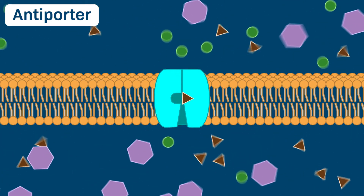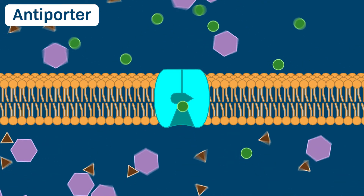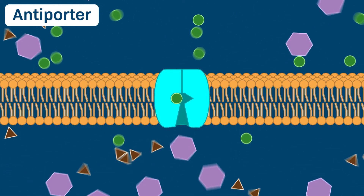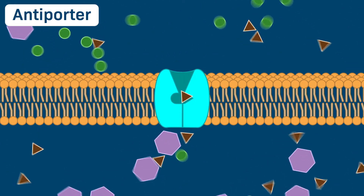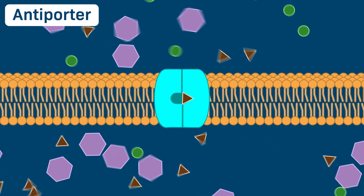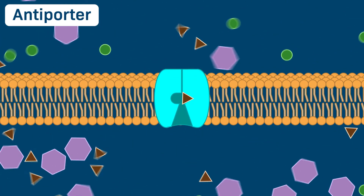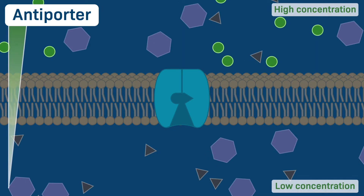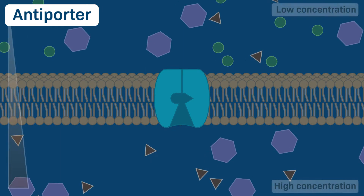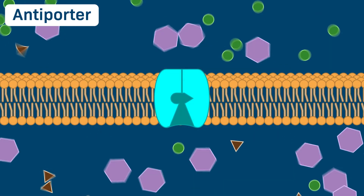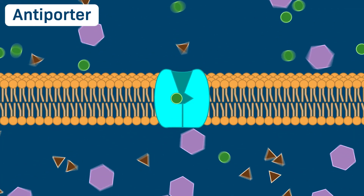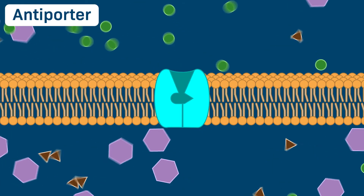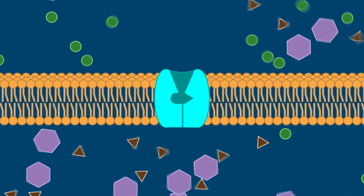In this example, the antiporter ferries the solutes represented by the green circles out of the cell, and the solutes represented by the brown triangles into the cell. Note that this antiporter is moving both solutes against their concentration gradients, making this an example of active transport, which requires an input of energy. Antiporters often hydrolyze ATP to pump solutes against their concentration gradients.